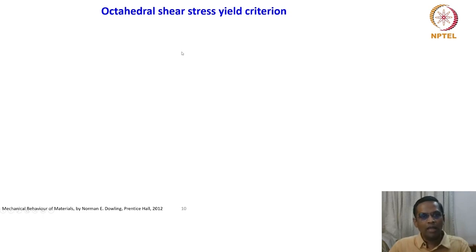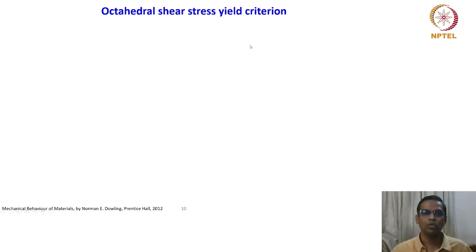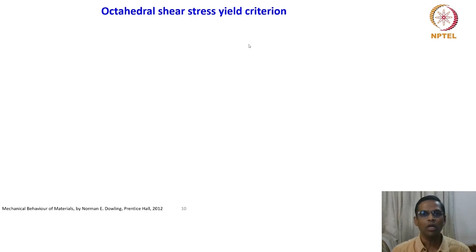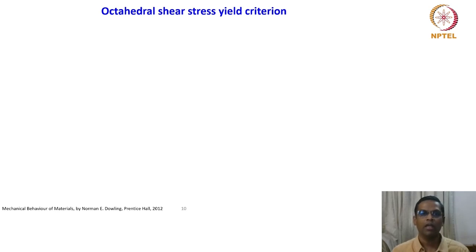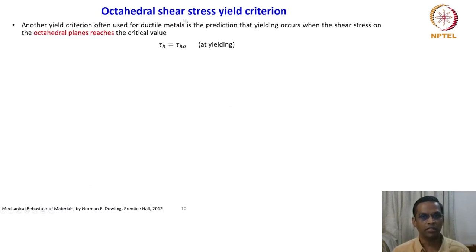We will now move on to another criterion called the octahedral shear stress criterion. This is again for ductile materials only, similar to the Tresca yield criterion. There are different yield criteria proposed, several depending upon the materials and the state of stress. We are looking at some of the important and simple ones, which can be related to parameters obtained by simple uniaxial tension test. This shear stress yield criterion for ductile material is the octahedral shear stress yield criterion.